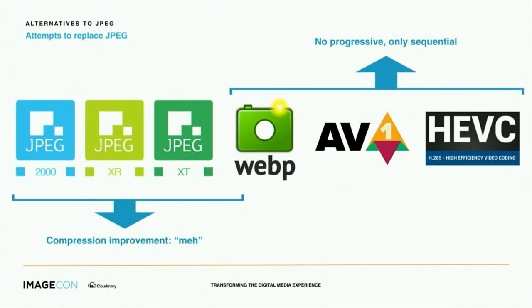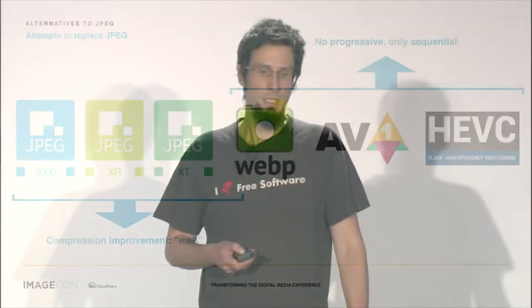The video-based codecs have the disadvantage that they don't have any progressive mode, which makes sense — in a video codec, why would you progressively render a single frame? It's not really a very useful feature in a video codec. But in an image format it is. So these formats only have a sequential mode, which is an important limitation.